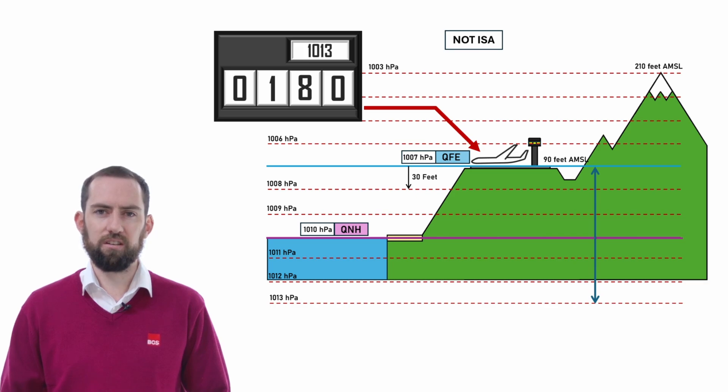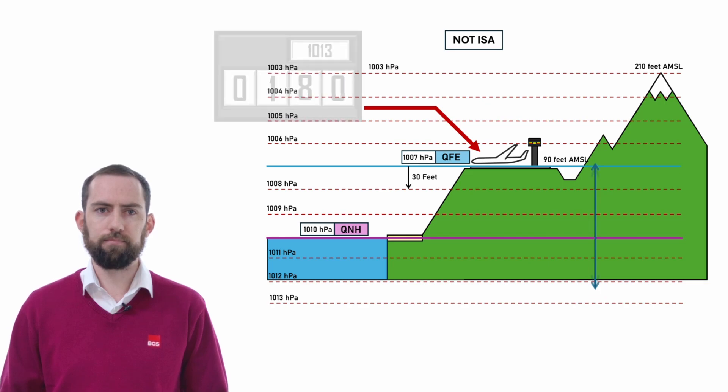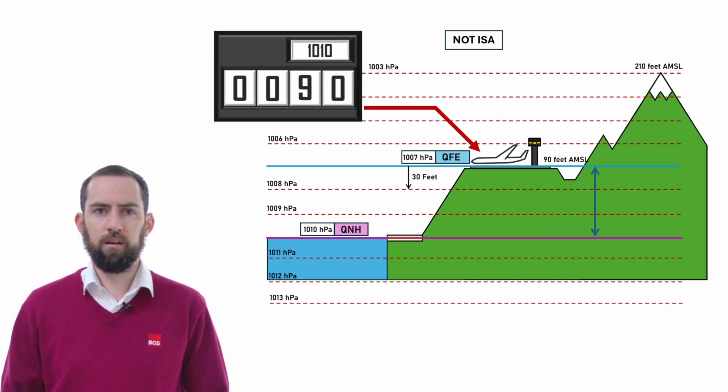Going back to the original scenario, the pilot needs to adjust the altimeter setting to the QNH to obtain the correct reading at the airfield. So we need to correct this by changing the figure in the Kollsman window to 1010, and that will restore our altimeter to the required reading of 90 feet.